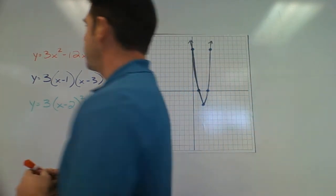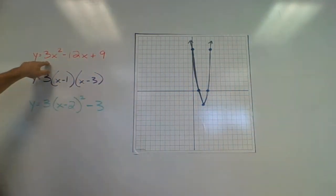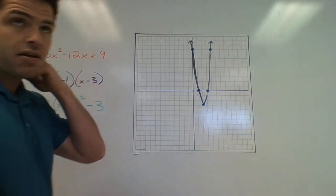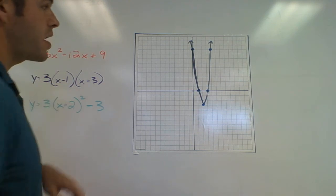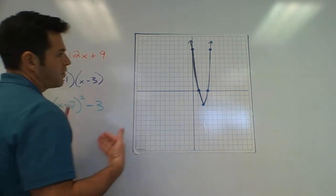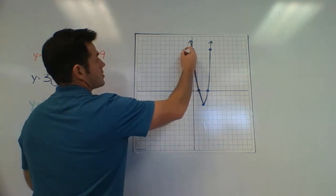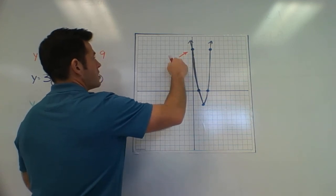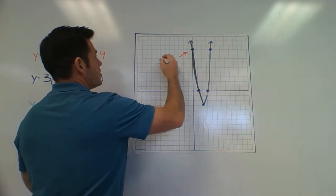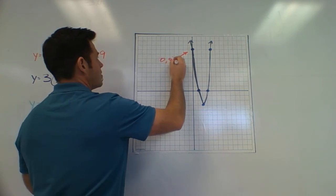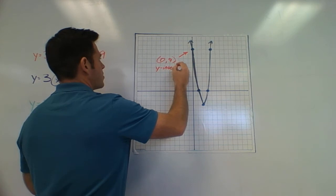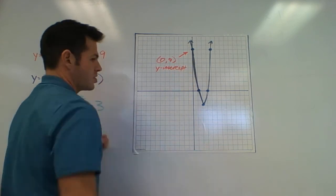So let me start off with the standard form function, y is equal to 3x squared minus 12x plus 9. And we should, at this point, understand that if I have standard form of a quadratic, that it very easily gives us the y-intercept. So I have the y-intercept over here. That would be the spot 0 comma 9. And that's my y-intercept for this function.